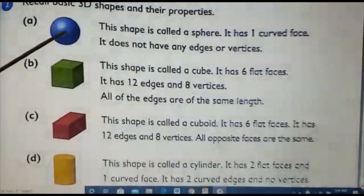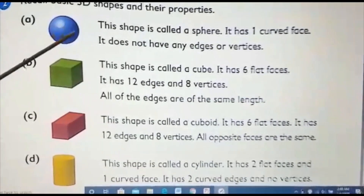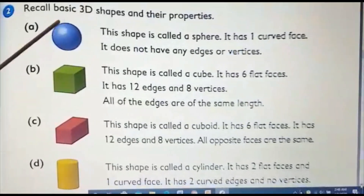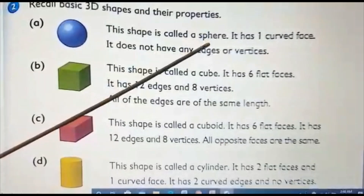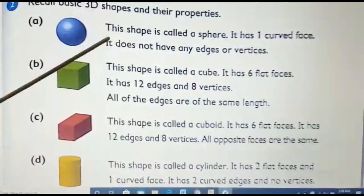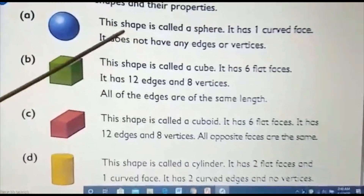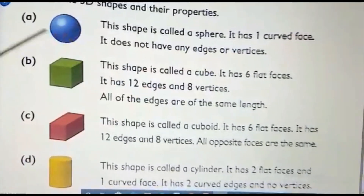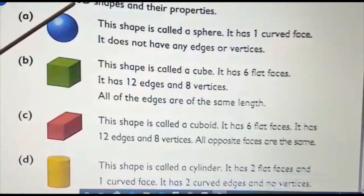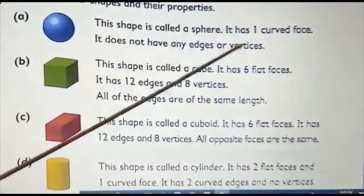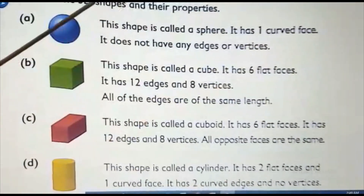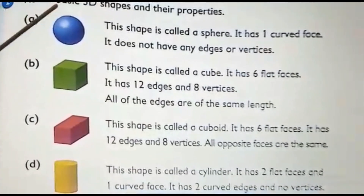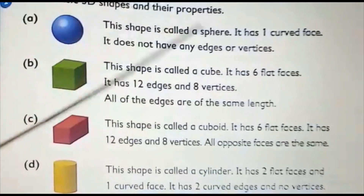The first shape looks like a circle but it is not — it's like a ball. It is called a sphere, which is the 3D version of a circle. A sphere has only one curved face and no edges and no vertices.